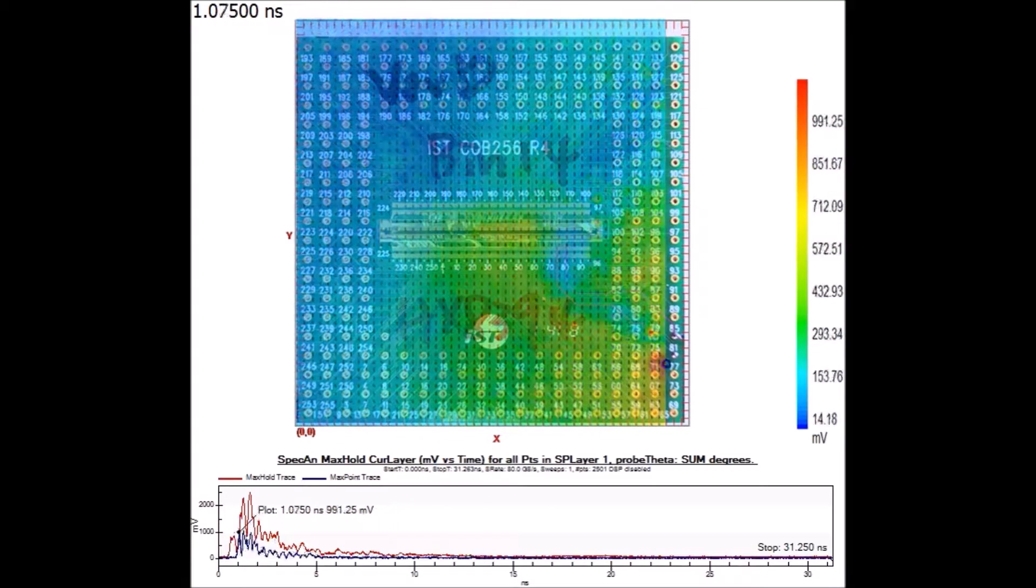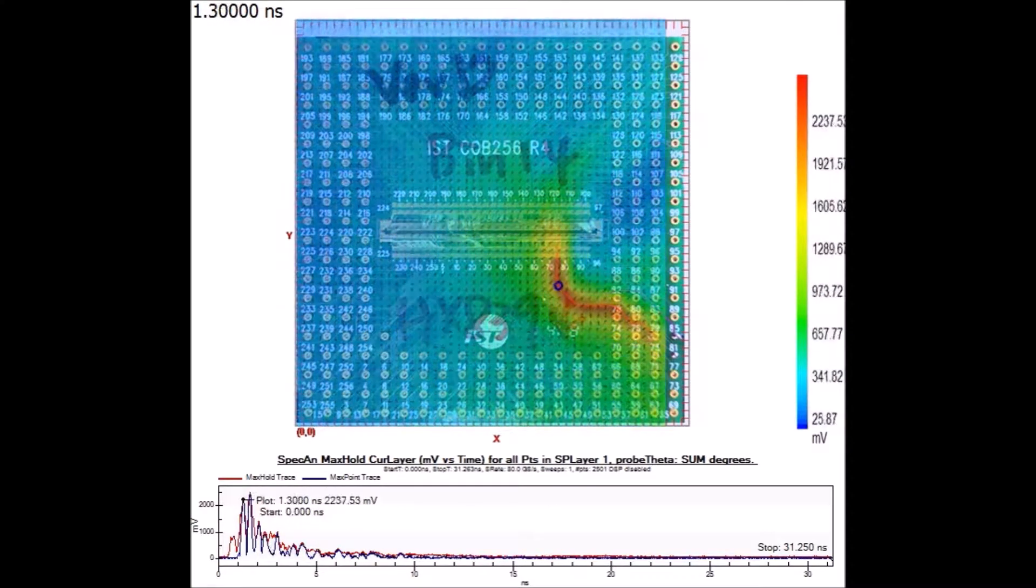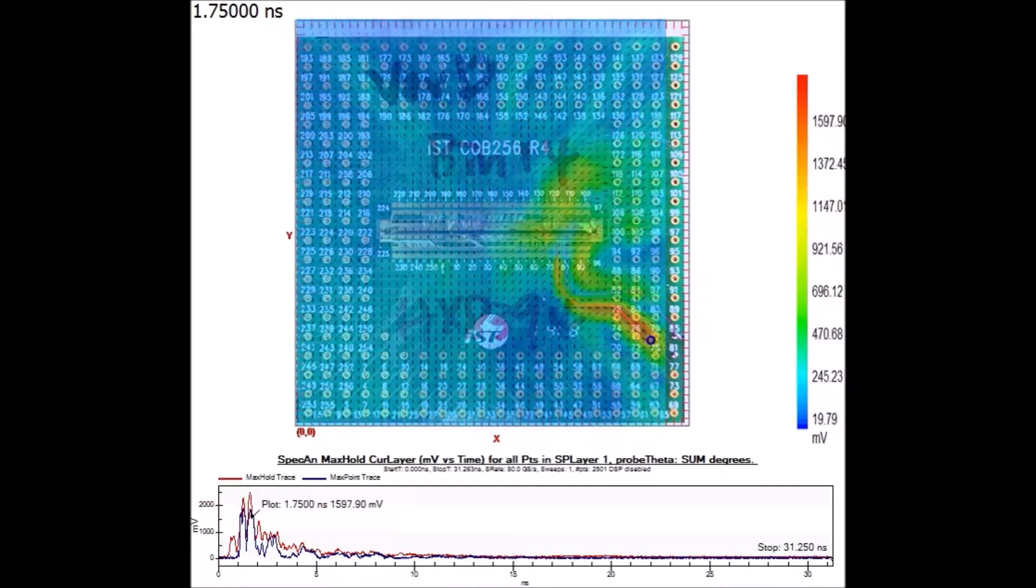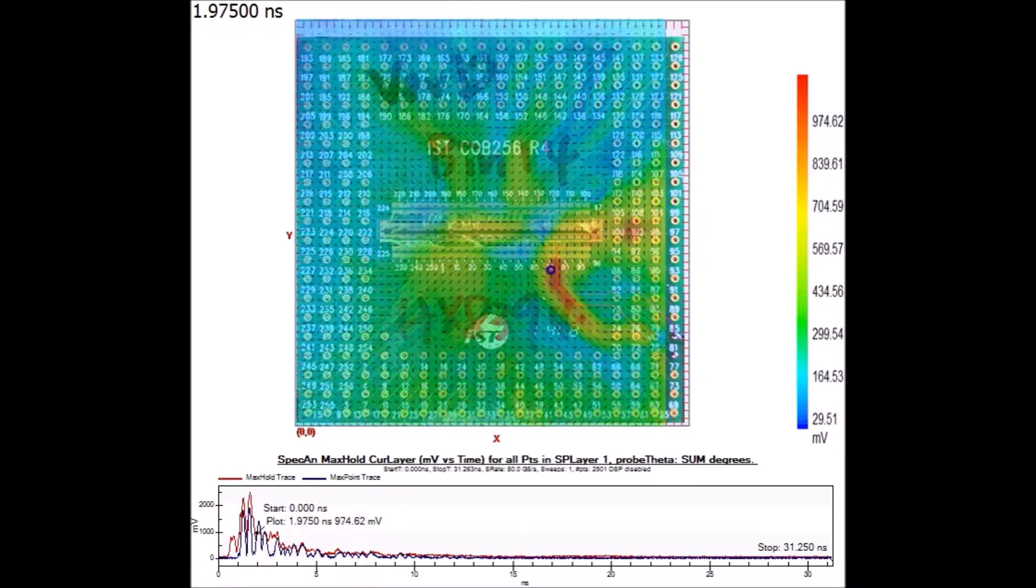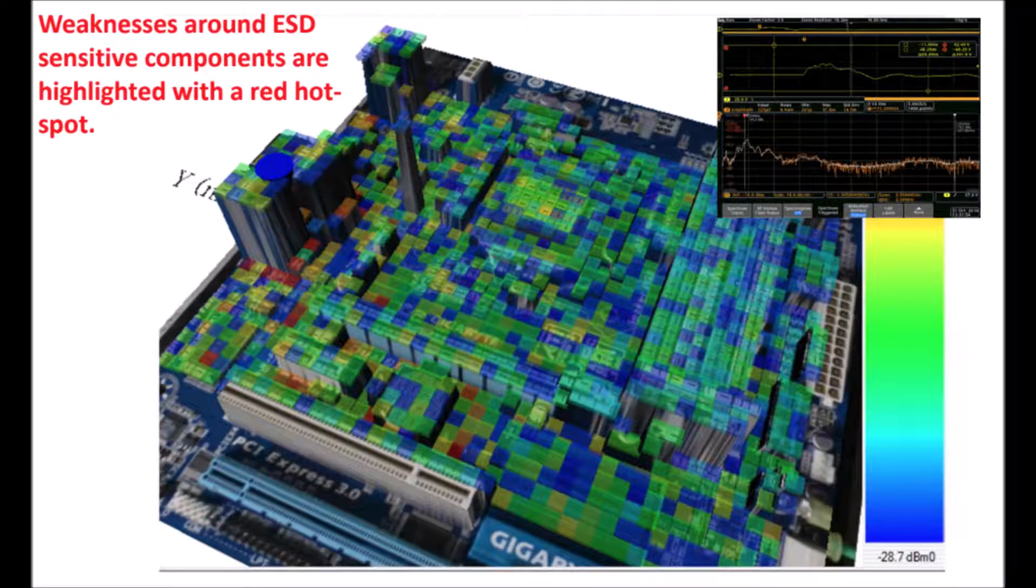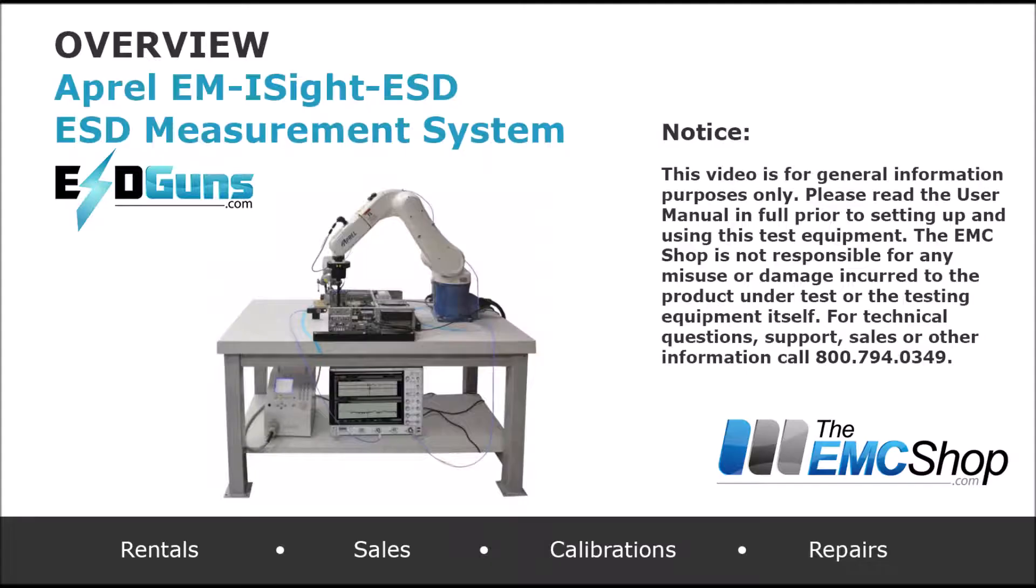Here is another look at the power flow through the board. Post-test analysis will highlight sensitive components or areas in red, allowing for easy determination of the weak points and speeding up development cycles. For more information on these ESD measurement systems, contact ESD Guns or the EMC shop.